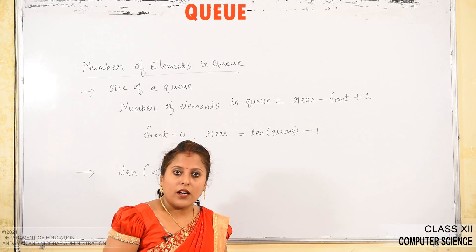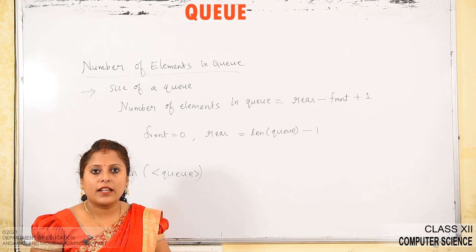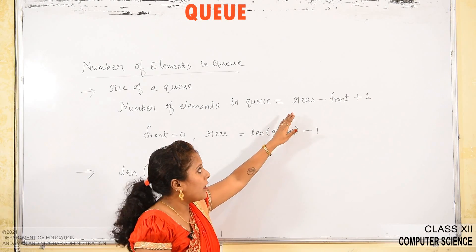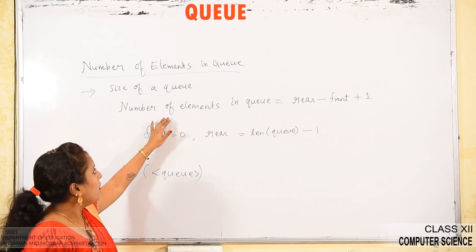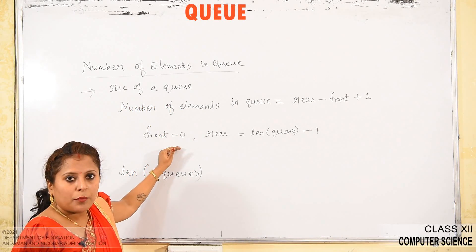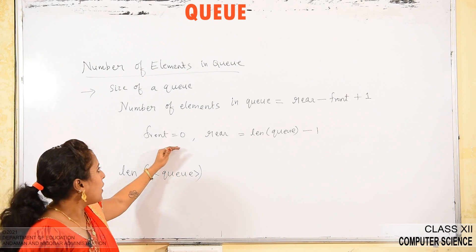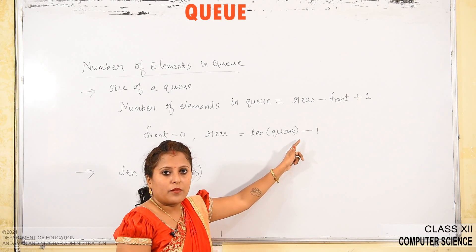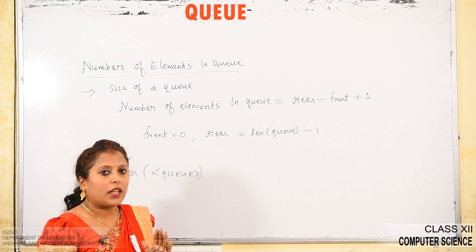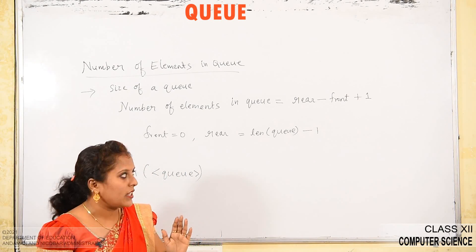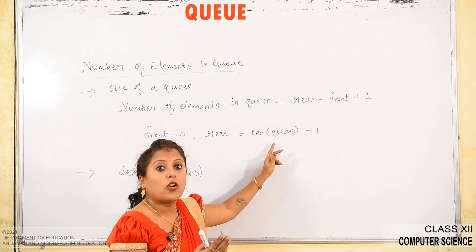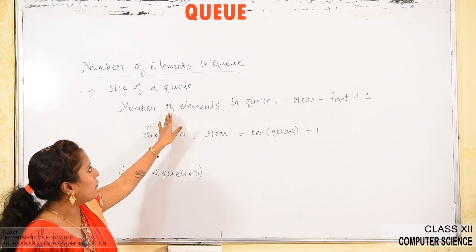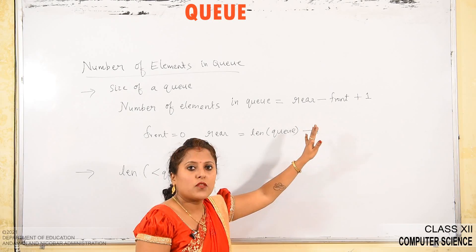If you want to find the number of elements in a queue, the formula is: number of elements in Q equals rear minus front plus 1. In a Python list implementation, front starts at 0 and rear equals length of Q minus 1. For a queue of size 4, rear would be 3.